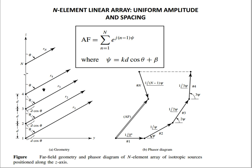The array factor equals summation where psi is k·d·cosθ + beta. Now k is the propagation constant or wave number, and d is the distance between each element, which is uniform in this case. So psi equals kd·cosθ + beta.